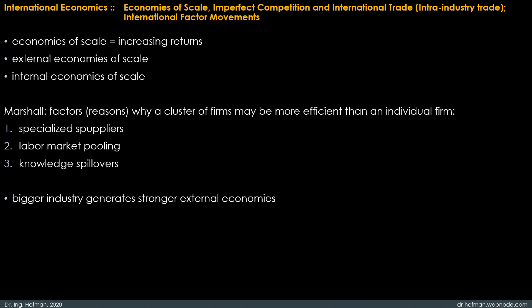The models of comparative advantage already presented were based on the assumption of constant returns to scale. That is, we assume that if inputs to an industry were doubled, industry output would double as well. In practice, however, many industries are characterized by economies of scale, also referred to as increasing returns, so that production is more efficient the larger the scale at which it takes place. Where there are economies of scale, doubling the inputs to an industry will more than double the industry's production.